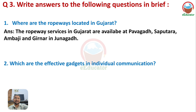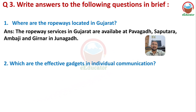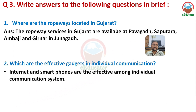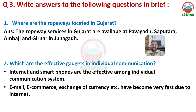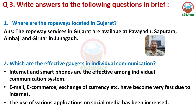Question: Which are the effective gadgets in individual communications? Internet and smartphones are the most effective among individual communication systems. With internet connectivity, email and e-commerce sites make currency exchange very easy. The use of various social media applications and other apps has increased for communication.